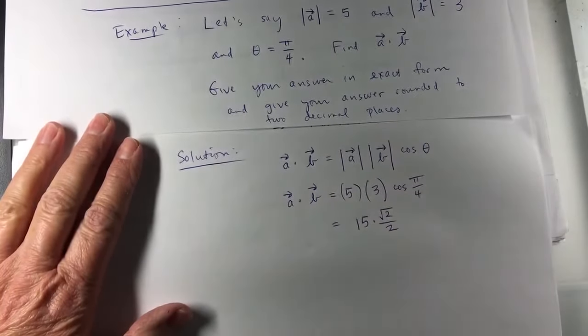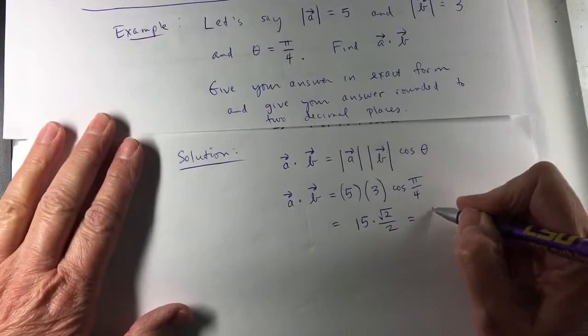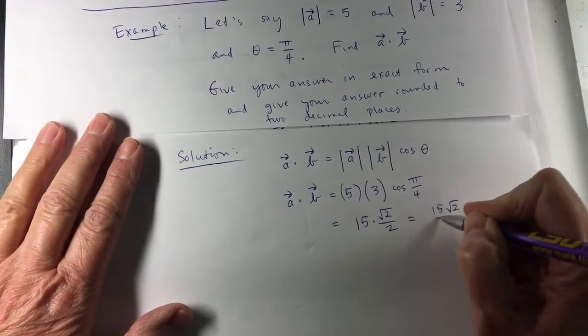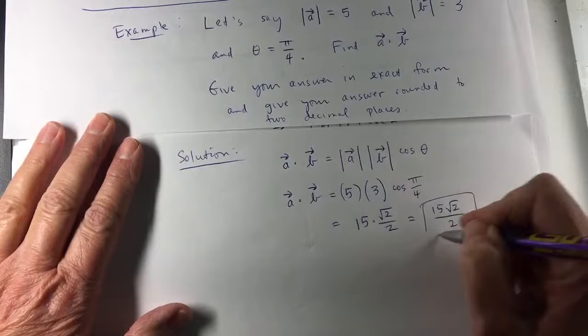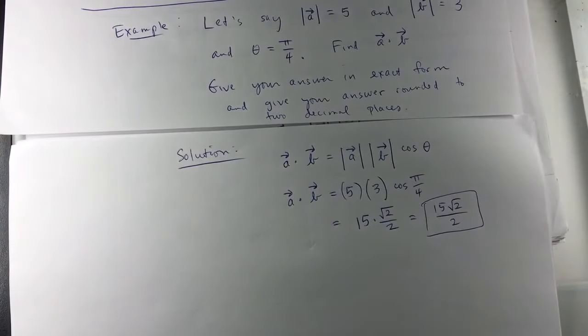And so 5 times 3 is 15, so that's 15 times the square root of 2 over 2. And if you write 15 over the square root of 2, that's fine.